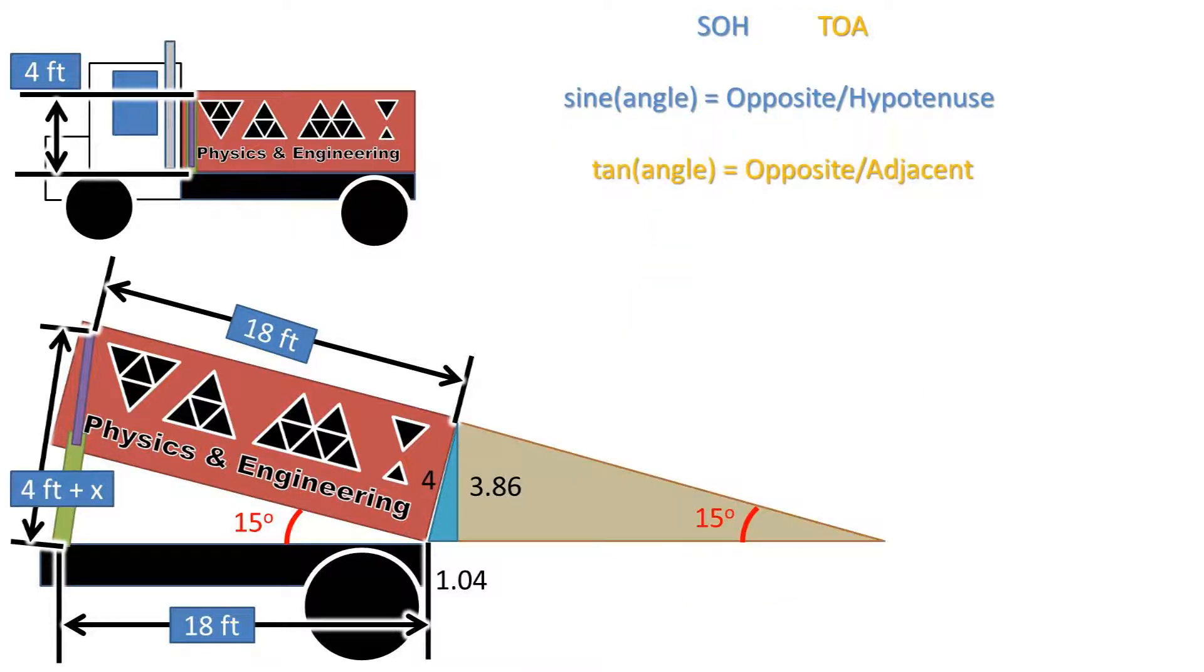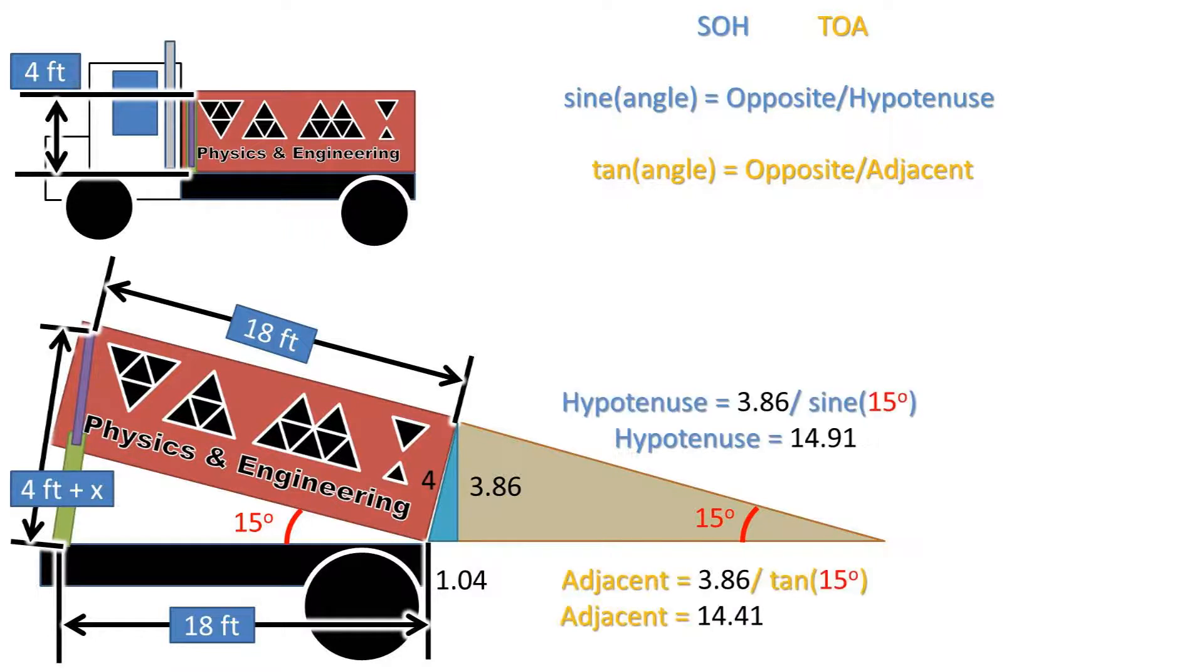Now we can make a second right triangle with one leg being the adjacent side length of the previous triangle. We are given the opposite side to the new triangle angle, and we are wanting to solve for the hypotenuse and opposite side, so we will be using the cosine and tangent portion of SOHCAHTOA. We get a hypotenuse of 14.91 feet and an adjacent side length of 14.41 feet.